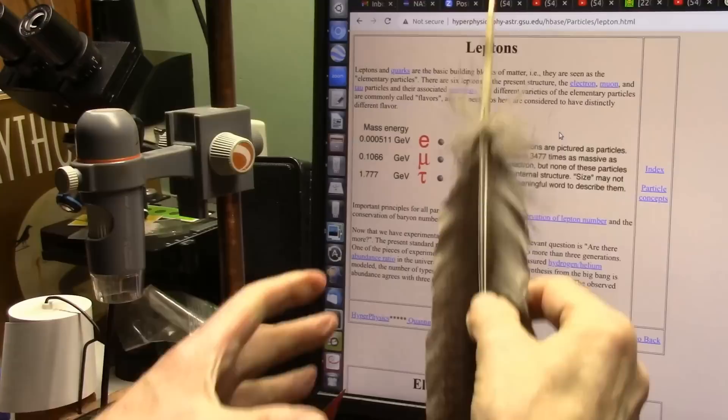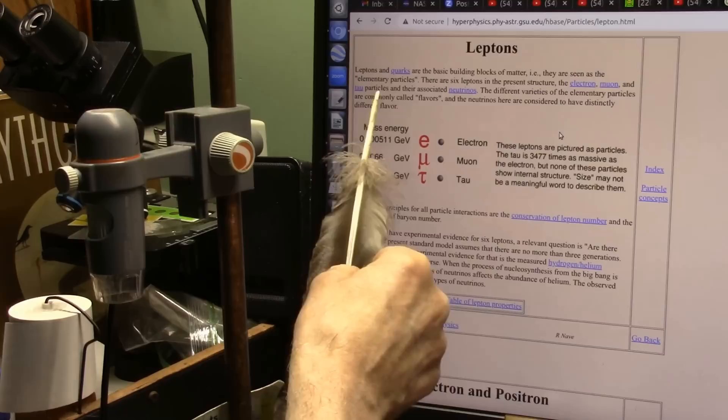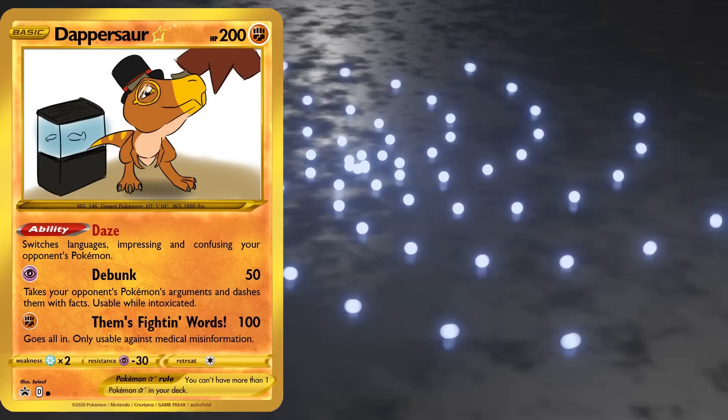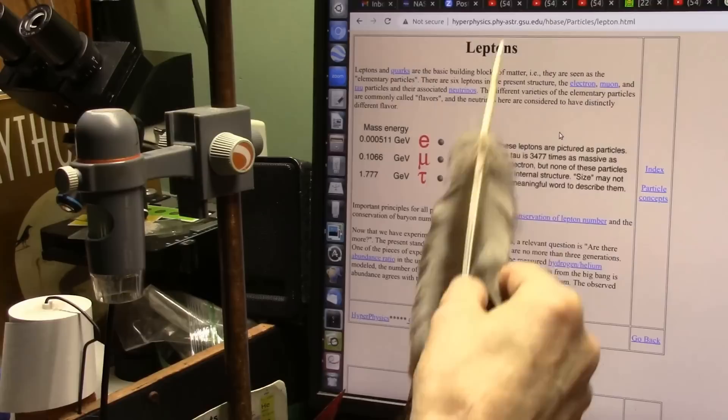There's six leptons in the present structure, the electron, muon, and tau particles, and their associated neutrinos. Let's see if the fact that that sentence indicates that neutrinos aren't the same particles as the associated non-neutrino leptons sinks in. I'm thinking he won't figure that out.